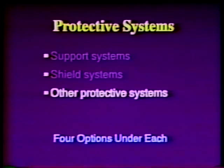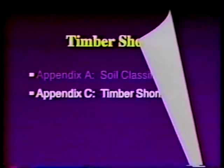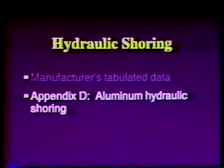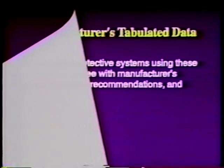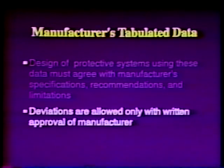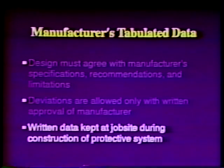The use of this category also requires the choice of one of four design options. The first option is to use Appendices A and C or D. For timber shoring in trenches, Appendix A — soil classification — and Appendix C — timber shoring — are to be used. Hydraulic shoring of trenches calls for use of either option two, manufacturer's tabulated data, or Appendix D, aluminum hydraulic shoring. Appendix D is to be used when manufacturer's tabulated data are not available. The second option is to use manufacturer's tabulated data. Design of support, shield, or other protective systems using these data must agree with all specifications, recommendations, and limitations issued by the manufacturer. Deviations are allowed only with the manufacturer's specific written approval. These data are to be in written form and kept at the job site during construction of the protective system.